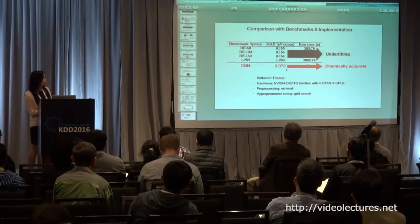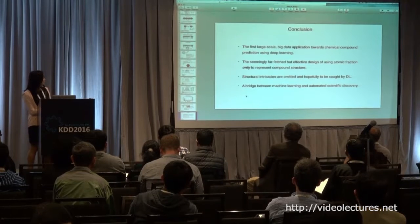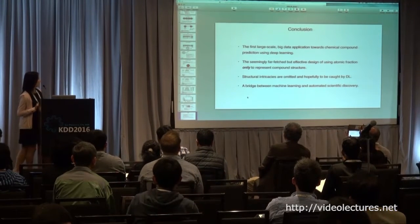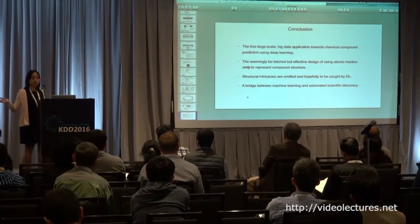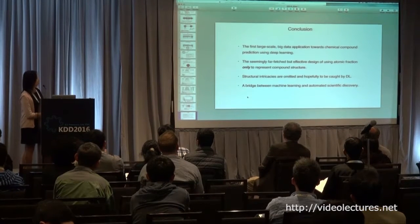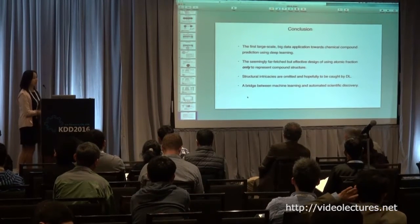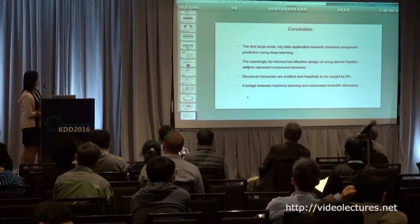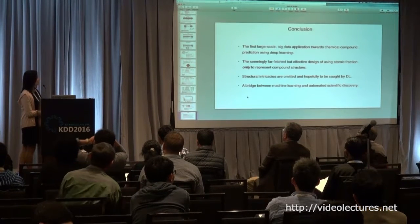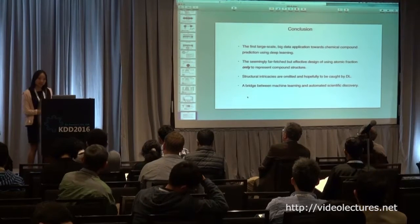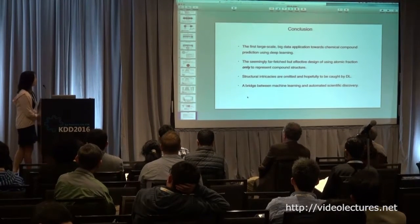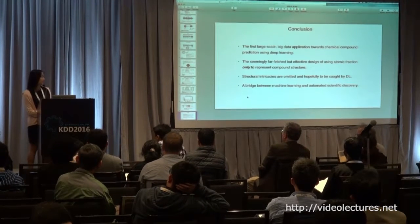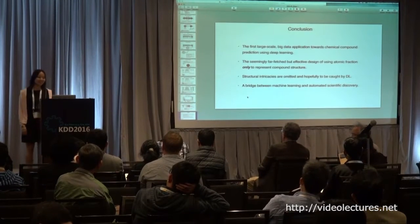In conclusion, we're building the first large-scale big-data application for chemical compound prediction using deep learning. The network is not extremely deep, but we're opening the field of deep learning for materials data discovery. We use only atomic fractions to predict complex compound properties, omitting structural intricacies — hoping the network captures those by itself. By doing this, we're building a bridge between machine learning and automated scientific discovery, which we think will be the next big thing.